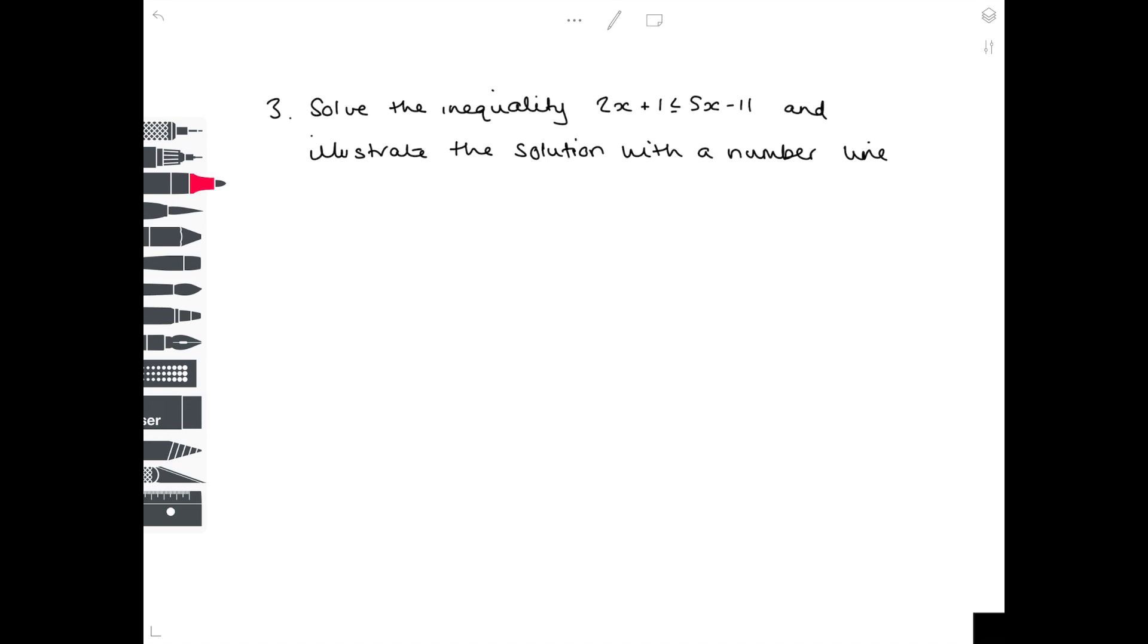Example 3. Solve the inequality 2x plus 1 is less than or equal to 5x minus 11. And illustrate the solution with a number line. So solving the inequality initially.